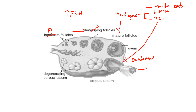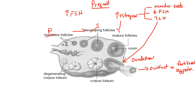This egg then goes into the oviduct or the fallopian tubes, where — because we're talking about when you are pregnant — it is actually going to be fertilized. When it is fertilized, you'll see this in chapter 15 when we look at human development: we call a fertilized egg a zygote. It's going to start dividing very quickly through mitosis, turning into a morula, and then into what's called a blastocyst.